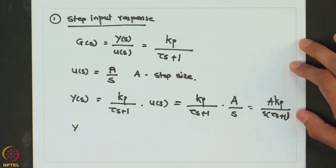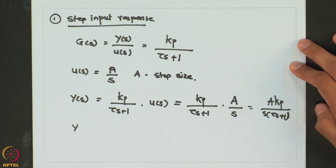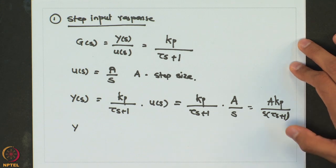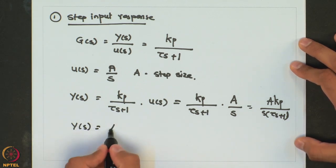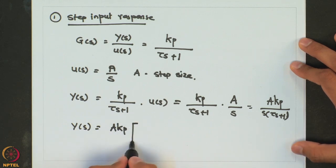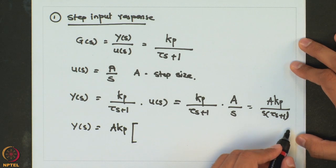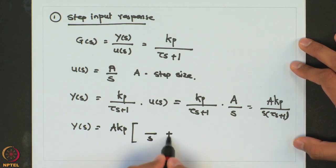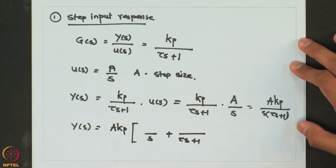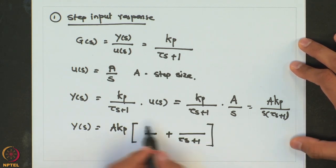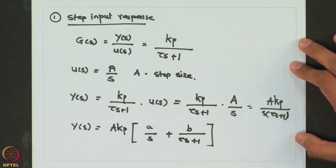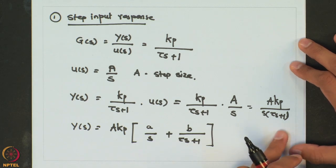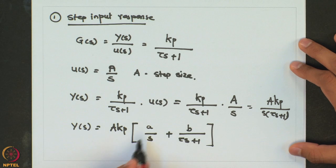In order to get the response in the real time domain, we have to invert this Laplace transform. The method we are going to use is the method of partial fractions — we split this Laplace transform into parts for which we know the inverse. We can write Y(s) equal to a·kp times [A over s + B over (tau·s + 1)], and the addition of these two fractions gives 1 over s·(tau·s + 1). The idea is to find the coefficients A and B.